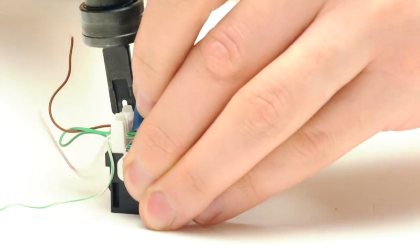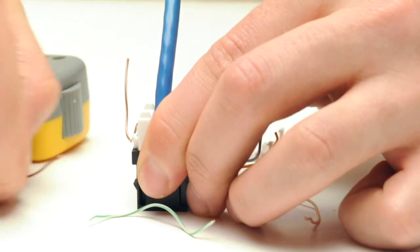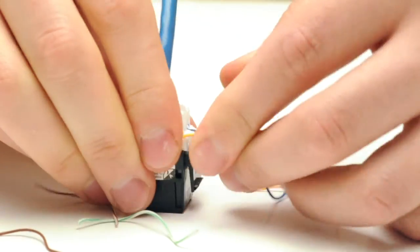The punch down tool should also trim off the excess cable. If it doesn't, you can pull, twist, or cut the excess cable off.